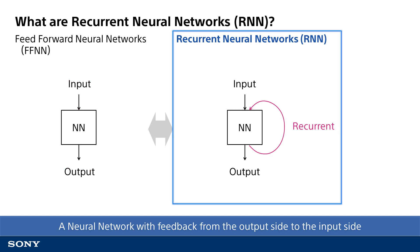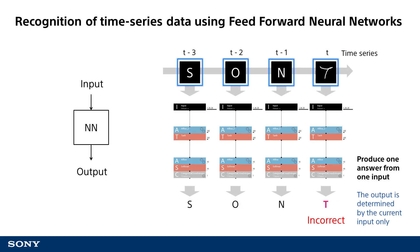In contrast, RNNs are primarily used to process time series data. This neural network includes a feedback loop that sends output of processed information back as an input at the next time step in the sequence. Now that you have a basic idea of an RNN, let's take a closer look at how this neural network with a feedback loop works with actual examples. In this example, multiple letters such as S, O, and N are input in word order and then processed with character recognition logic one by one.